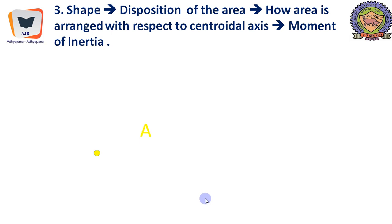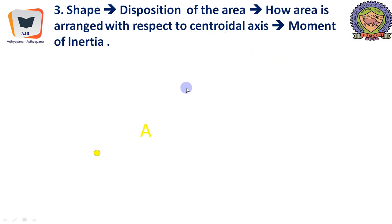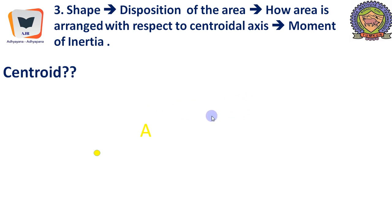The third important property represents the shape of the plane figure — how the different areas of that surface are distributed, or arranged, with respect to some centroidal axis. This property is called moment of inertia. These axes determine the structural action of the component, so we will first define the centroid before developing methods to locate it.